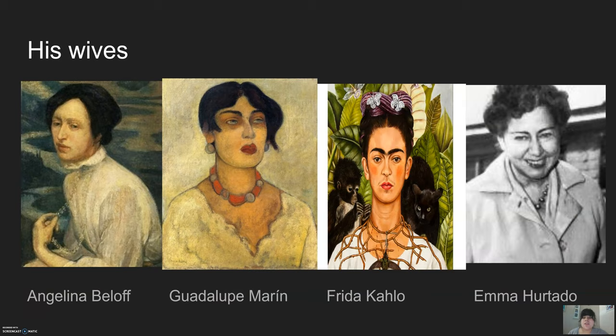His wives were Angelina Beloff, a Russian artist who did most of her work in Mexico City. He married her from 1911 to 1921. Then he married a Mexican model named Guadalupe Marin in 1922 and divorced her in 1928.